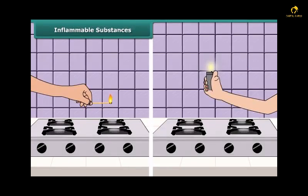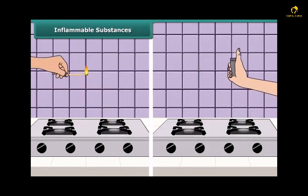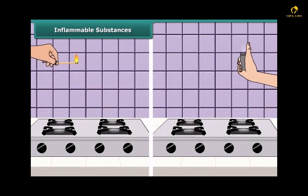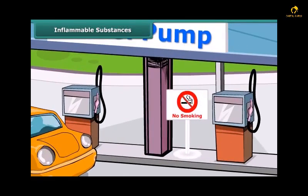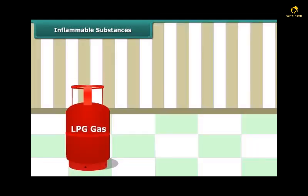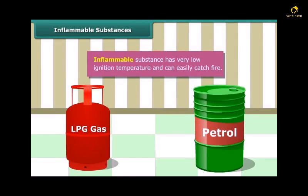Your mother would have said to keep a burning matchstick or lighter away from the LPG gas stove in the kitchen, because LPG catches fire very easily. Similarly, you must have seen a no-smoking sign at petrol pumps, because petrol also catches fire very easily. Substances like LPG and petrol are inflammable because they have a low ignition temperature, due to which they readily catch fire.